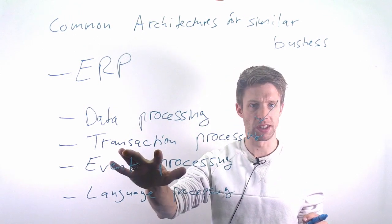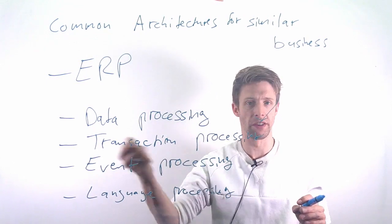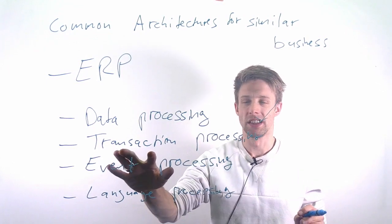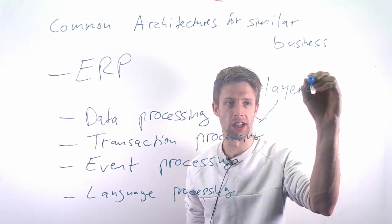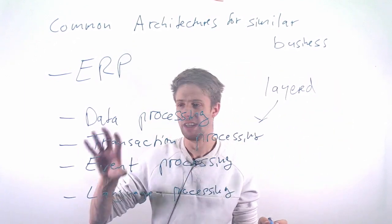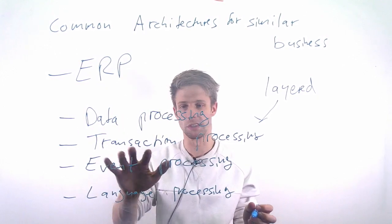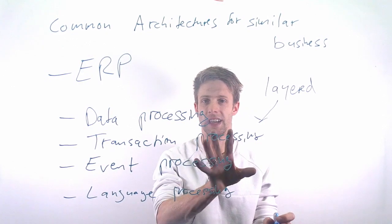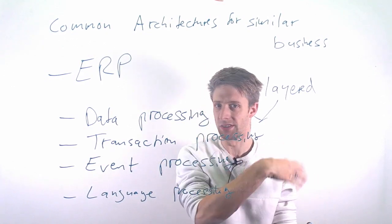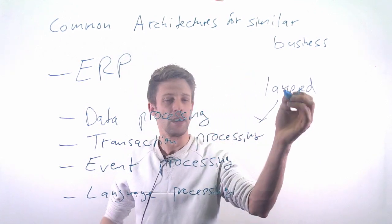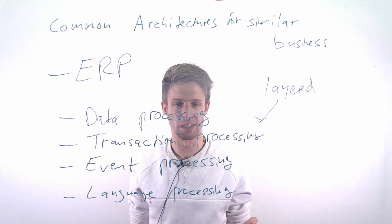For example, transaction processing - there is an example of an ATM, an automatic teller machine to withdraw money. This could be organized using a layered architecture, with different layers from the user pressing in the PIN and requesting how much money they would like to withdraw, to the actual processing, sending it to the bank, and returning the money. It's just different ways that fit a specific business context.